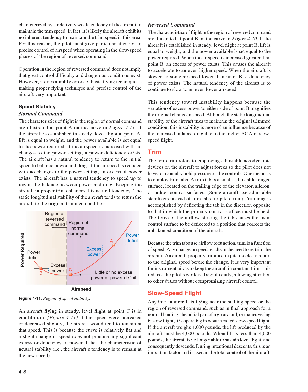Trim. The term trim refers to employing adjustable aerodynamic devices on the aircraft to adjust forces so the pilot does not have to manually hold pressure on the controls. One means is to employ trim tabs — a small, adjustable hinged surface located on the trailing edge of the elevator, aileron, or rudder control surfaces. Some aircraft use adjustable stabilizers instead of trim tabs for pitch trim. Trimming is accomplished by deflecting the tab in the direction opposite to that in which the primary control surface must be held. Because trim tabs use airflow to function, trim is a function of speed, and any change in speed results in the need to re-trim the aircraft. It is very important for instrument pilots to keep the aircraft in constant trim, as this reduces the pilot's workload significantly.